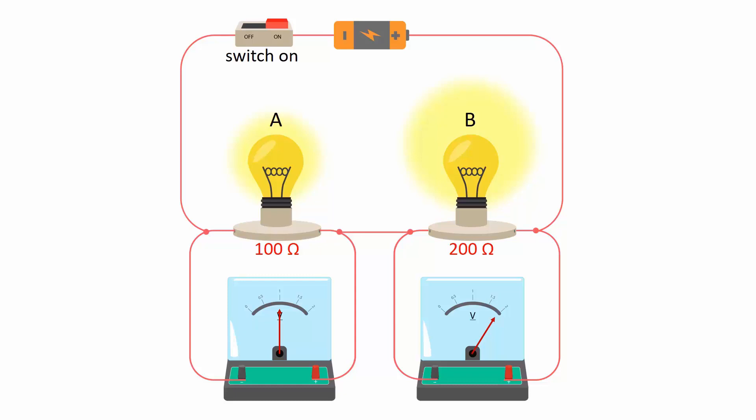Now observe the brightness of the bulbs. Note that bulb B glows brighter than A. Also, the voltmeter across bulb A shows a smaller reading than bulb B.